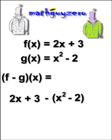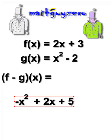So we don't accidentally mess up this second sign here. So it looks like 2x + 3 minus (x² - 2). I'm not going to nitpick here, but this can get confusing. So we're just going to call it -x² + 2x + 5. That's it. MGZ out.